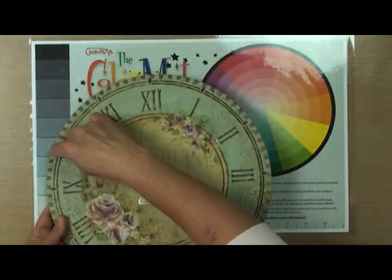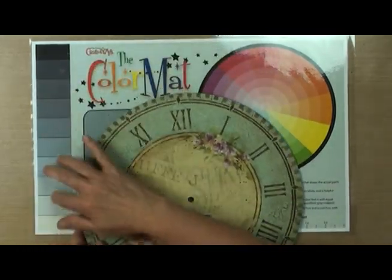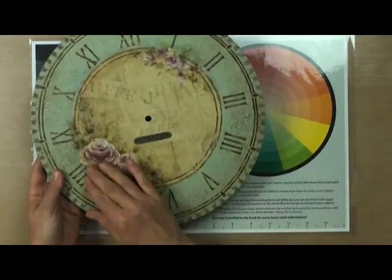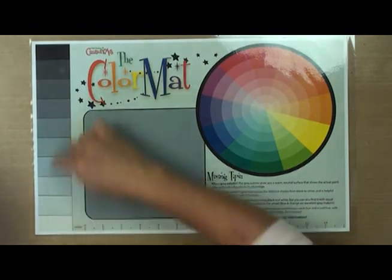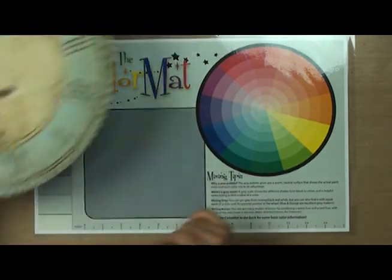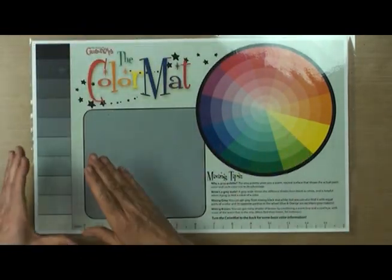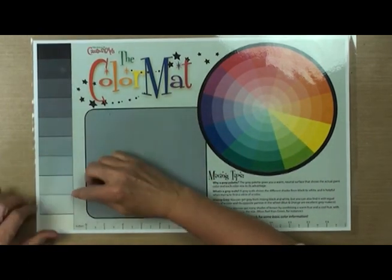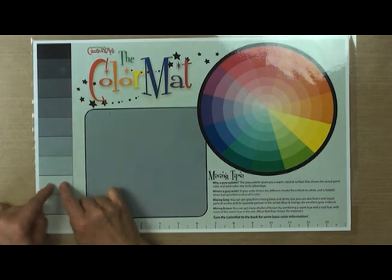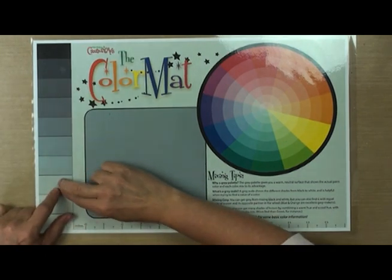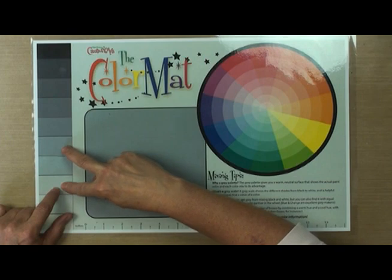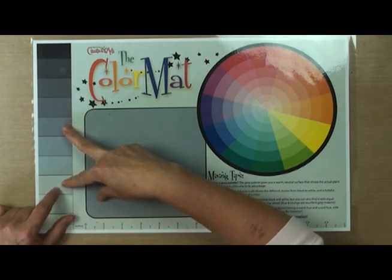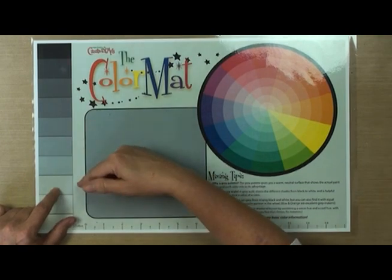You squint your eyes at that and you say, okay, my background is like a value one, two, three, four, and then so that means maybe I want my rose to be the same value. You can use this grayscale for deciding how dark or light you want to do things. If you're going to shade something and you're starting with a value of say three, then you want to do a two-step shade. If you reach further, then you run the risk of your shading looking very harsh.